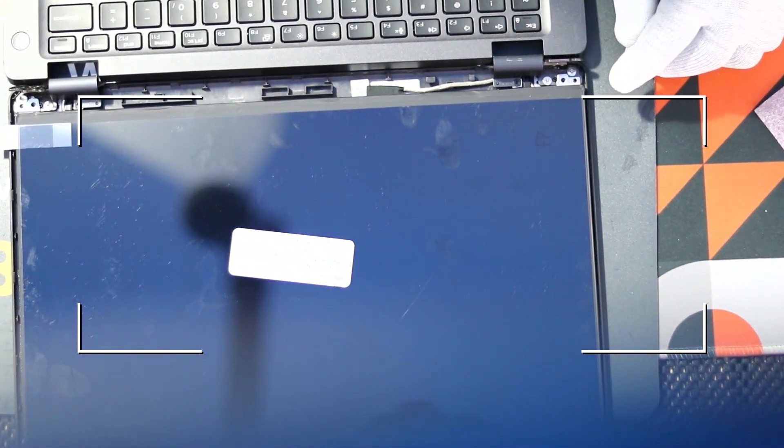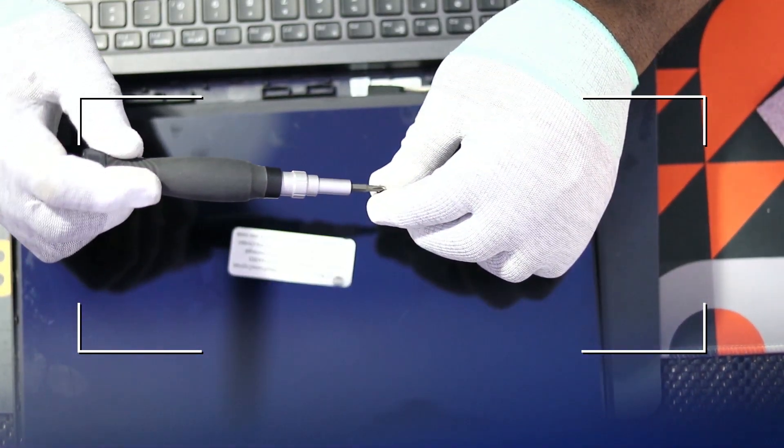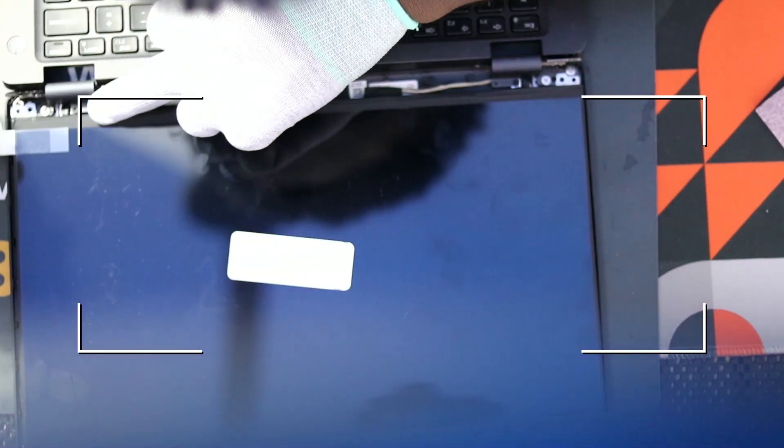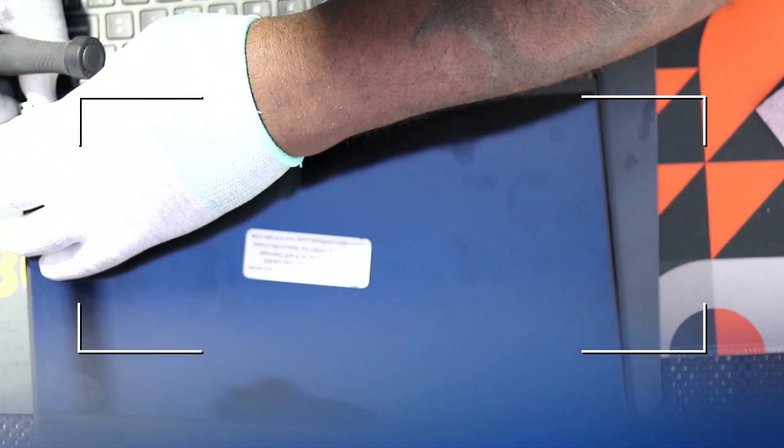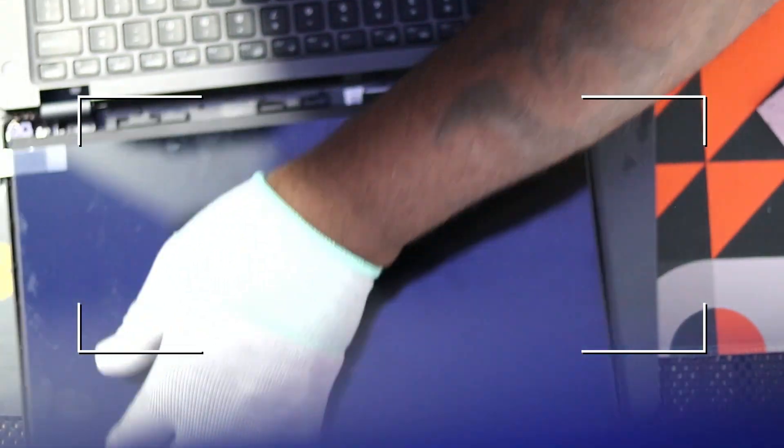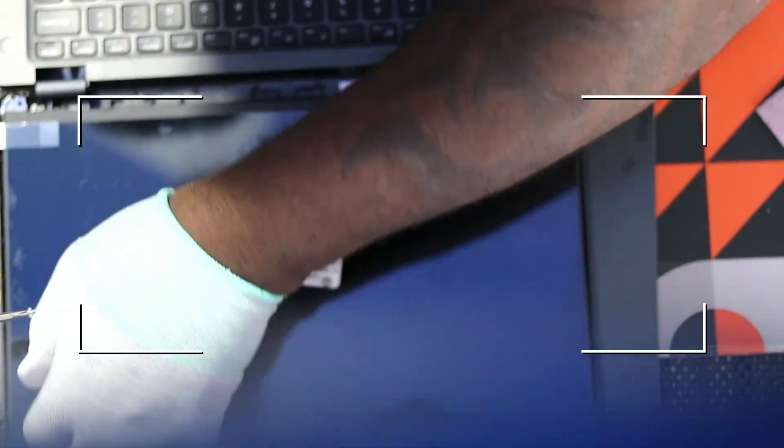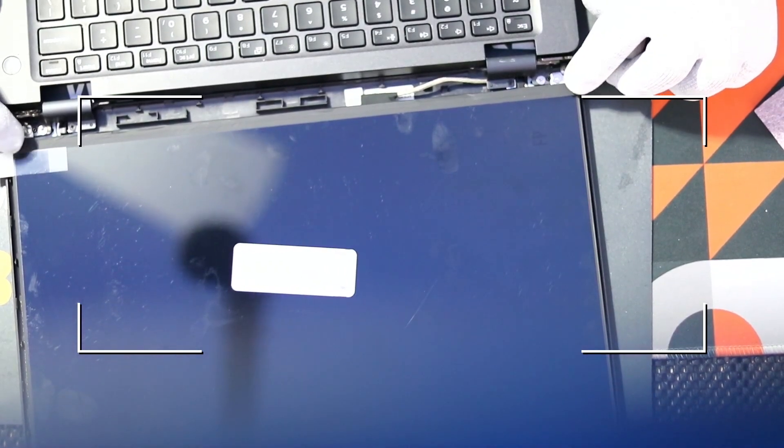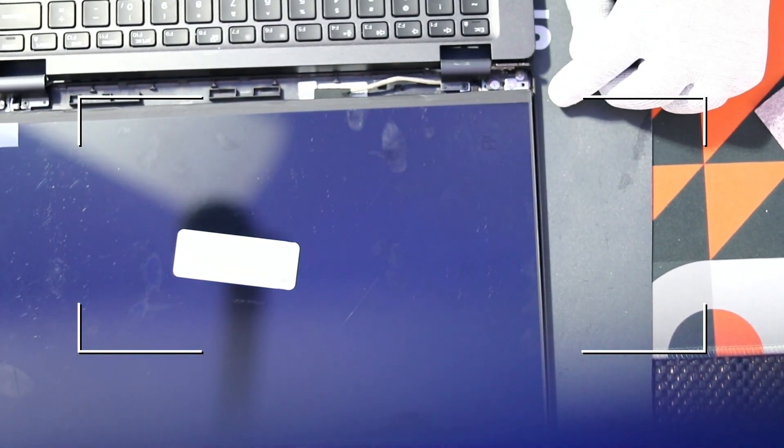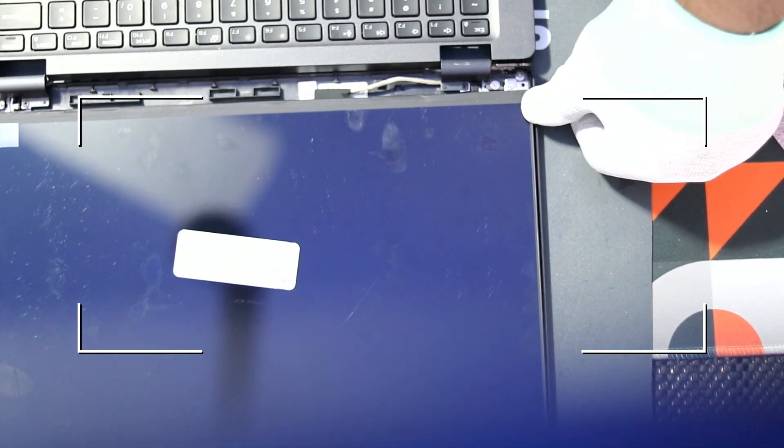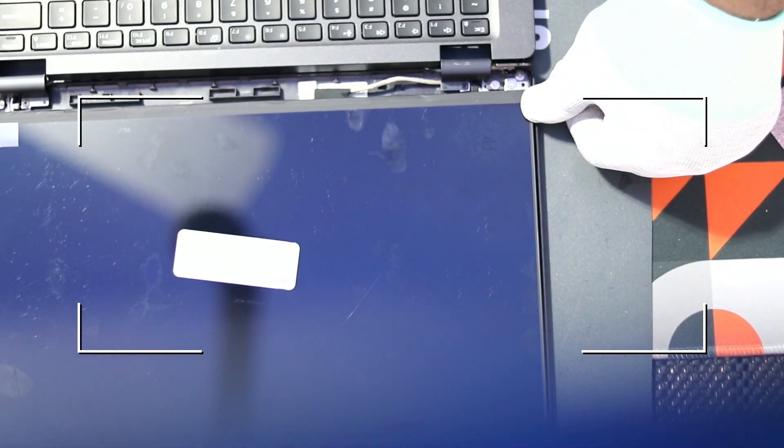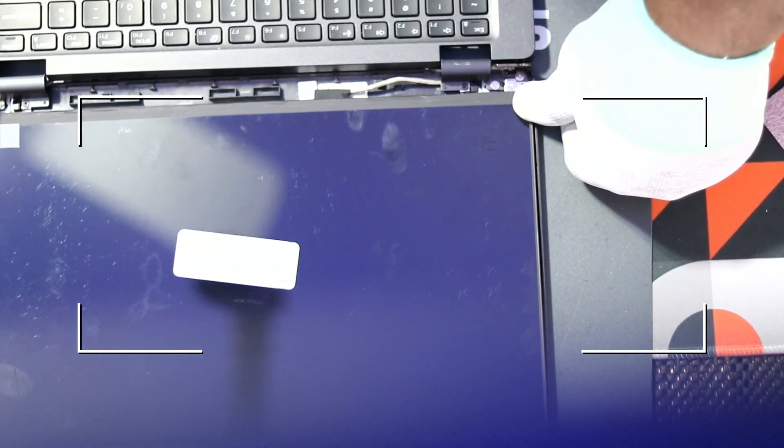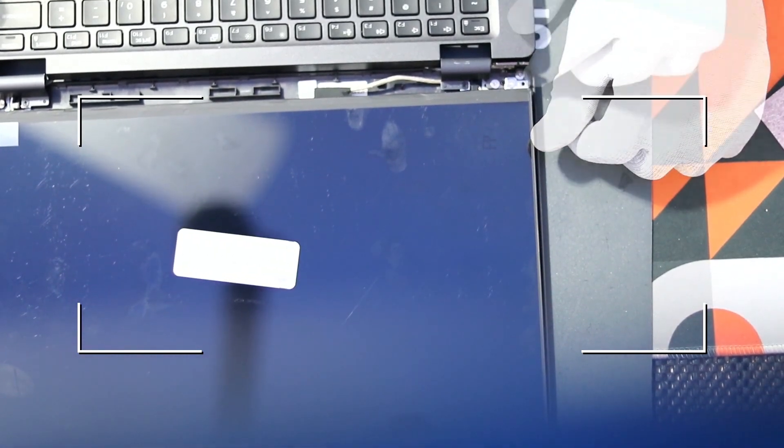Go ahead and put these screws back in. Now for the corners, if you have the corners lifting and they're not down, what you can do is you can get a nice heat gun and you can just heat up the glue from the back side and then press it down to keep it.